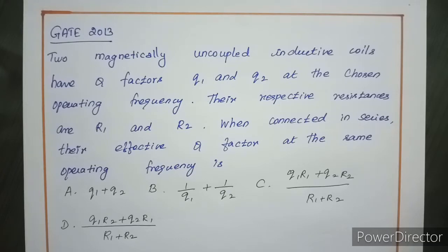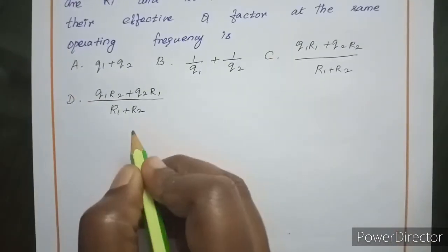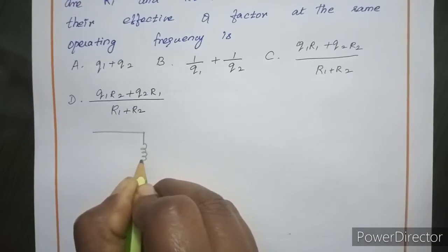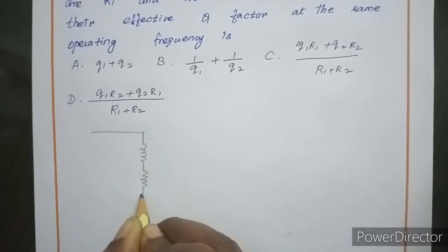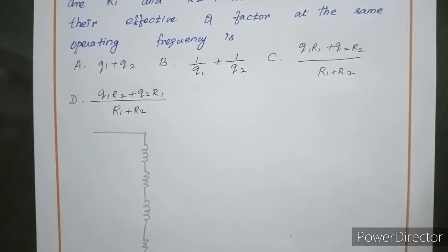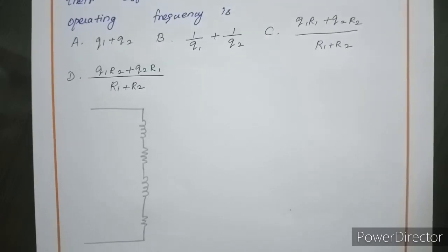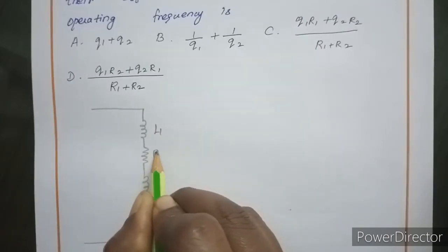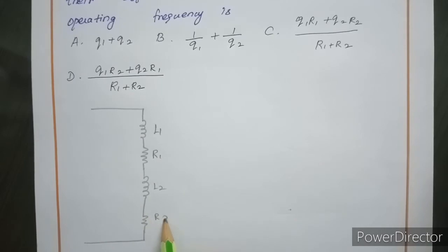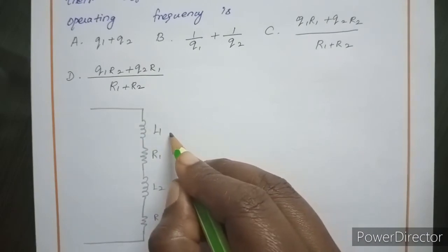Two magnetically uncoupled inductive coils — we have two practical coils. One coil has resistance and inductance, so we have L1 and R1 for the first coil, and L2 and R2 for the second coil. This is the practical representation of two uncoupled inductive coils.